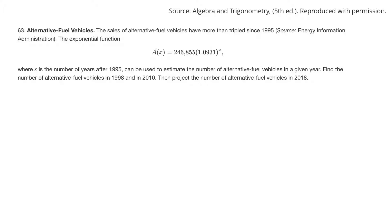Now, the last one has to do with an exponential function right there, and they say where x is the number of years after 1995. So find the number of alternatives in 1998. So how many years after 1995 is that? That's 3 years after. So I'd figure out the value of the function, A, when x is 3. So 246,855, 1.0931 to the third. Then if they want to know how many there are in 2010, 2010 minus 1995, I think that'd be 15 years. I'd do the same thing, but I'd put in a 15 there and a 15 there.